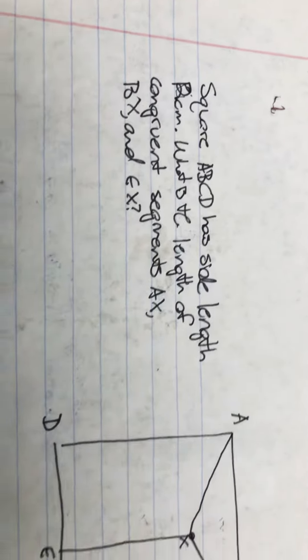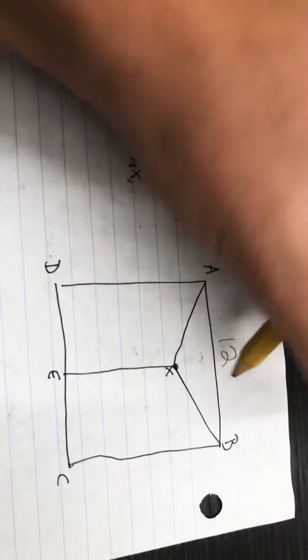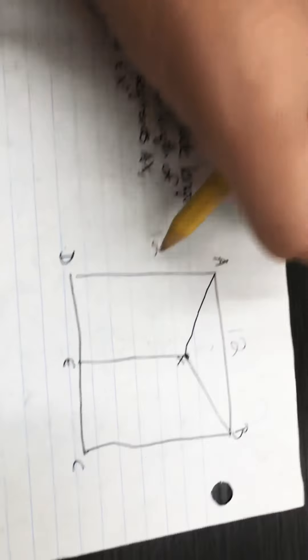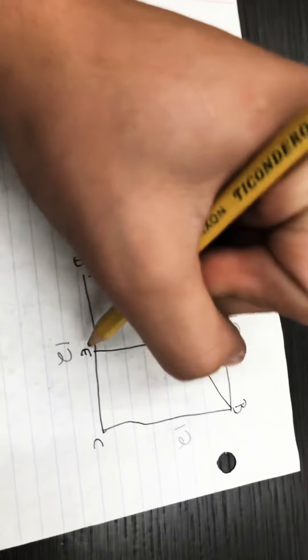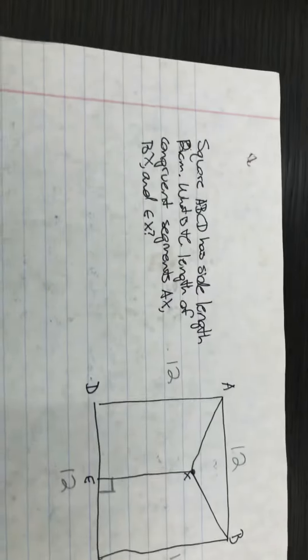Square ABCD has side length of 12 centimeters. I'm going to fill that in right now. And in case this wasn't obvious, that's a right angle right there.